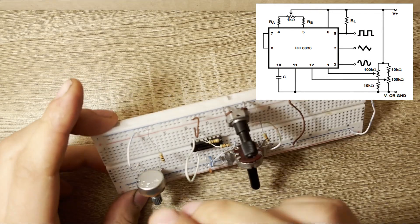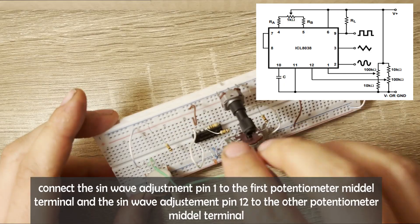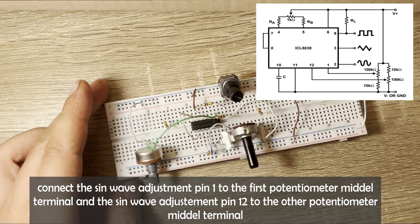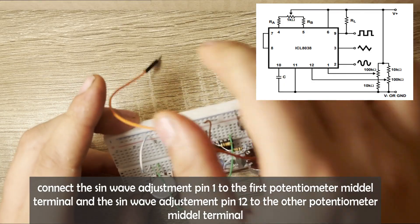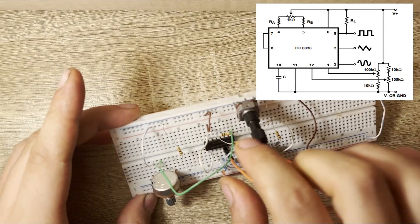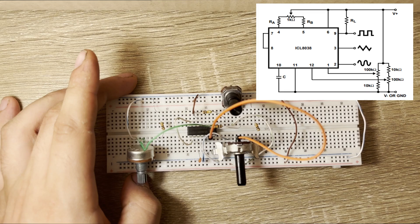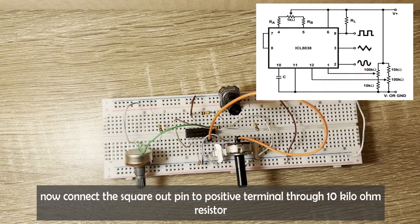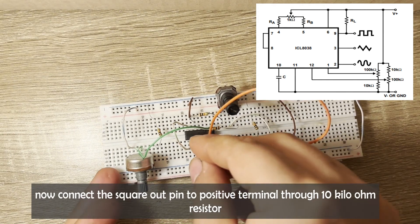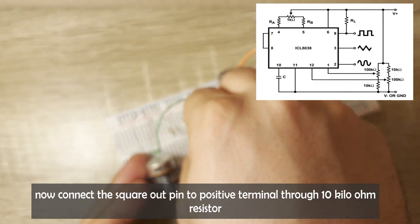Connect the sine wave adjustment pin 1 to the first potentiometer mid-terminal and the sine wave adjustment pin 12 to the other potentiometer mid-terminal. Now connect the square-out pin to the positive terminal through a 10 kOhm resistor.